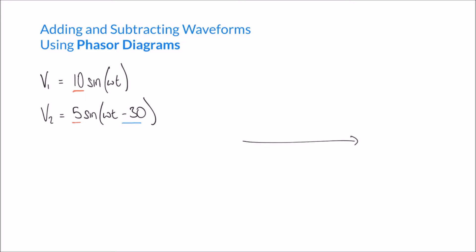A phasor is simply an arrow, and an arrow has a length and a direction. The length of the arrow is determined by the amplitude of our waveform, so V1 would have a length of 10 and V2 would have a length of 5. The scale doesn't matter in absolute terms, but these two waveforms must be to scale with one another — so V1 will always have a phasor twice the length of V2. By default, a phasor with no phase shift should point to the right along the horizontal.